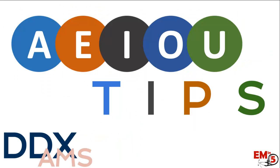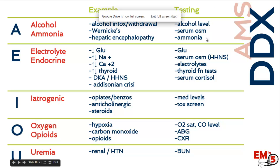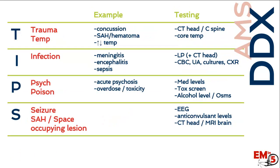For the differential, we use the mnemonic AEIOU TIPS to think through the big differential for altered mental status. A stands for alcohol or ammonia — meaning hepatic encephalopathy. E is for electrolyte or endocrine abnormalities. I covers iatrogenic causes, such as medication levels or toxicology. O is for opioids — like a heroin overdose — or oxygen, meaning primary hypoxia or carbon monoxide exposure. U stands for uremia, checked with a BUN level. For TIPS: T is trauma or temperature; I is infection, ranging from urosepsis to meningitis or encephalitis; P is psychiatric causes like psychosis, or poisoning from various overdoses; and S is seizures, subarachnoid hemorrhage, or space-occupying lesions.